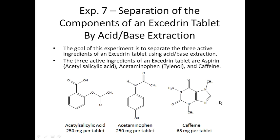This is the pre-lab lecture video for experiment 7, where we're going to separate the components of an Excedrin tablet using a series of acid and base extractions. There are three active ingredients in an Excedrin tablet: aspirin (also called acetylsalicylic acid), acetaminophen (the major component in Tylenol), and caffeine.